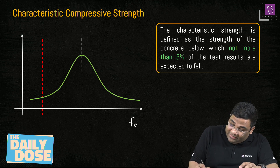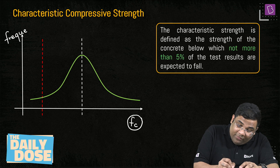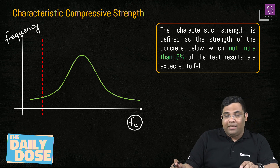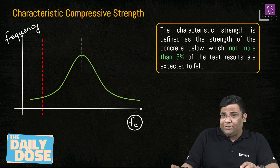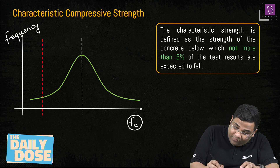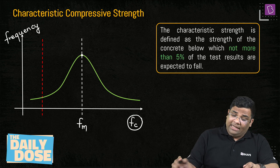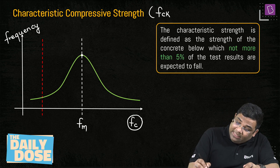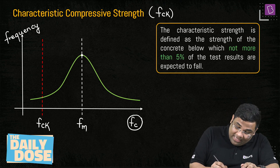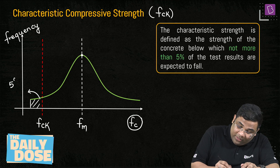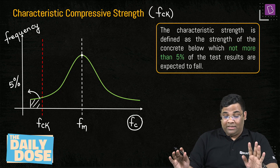We plot a curve between the compressive strength FC and the frequency. When we plot this, we get a curve — this green curve — which is the normal distribution or Gaussian distribution. Corresponding to the maximum frequency, we get the mean strength FM. The characteristic compressive strength FCK is chosen such that only 5% of samples have strength less than FCK.